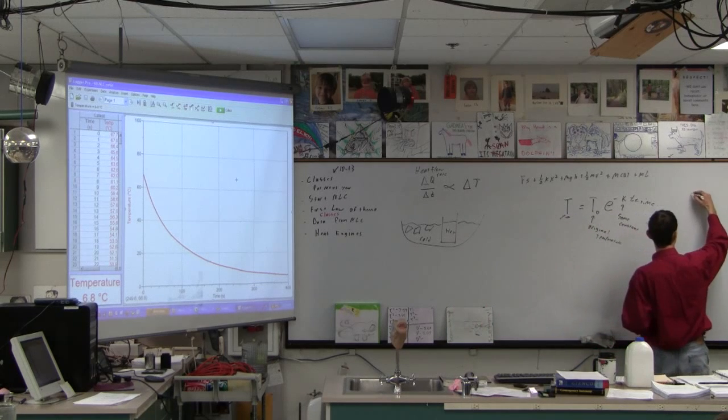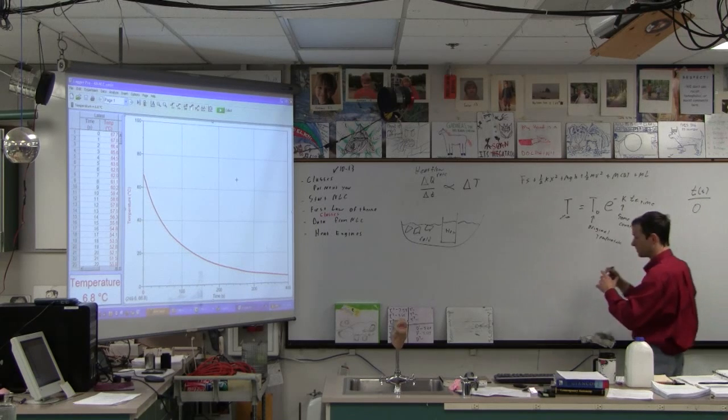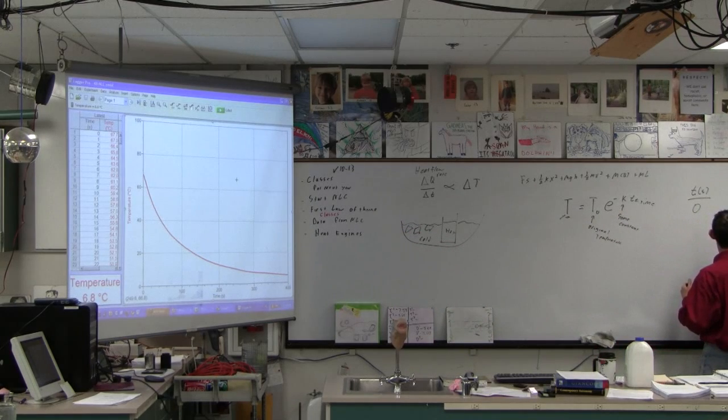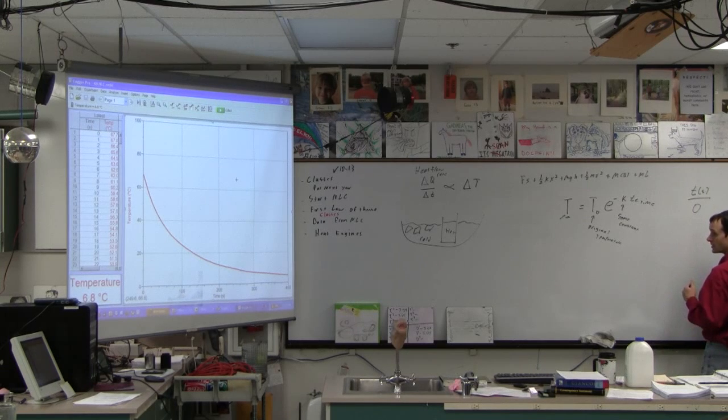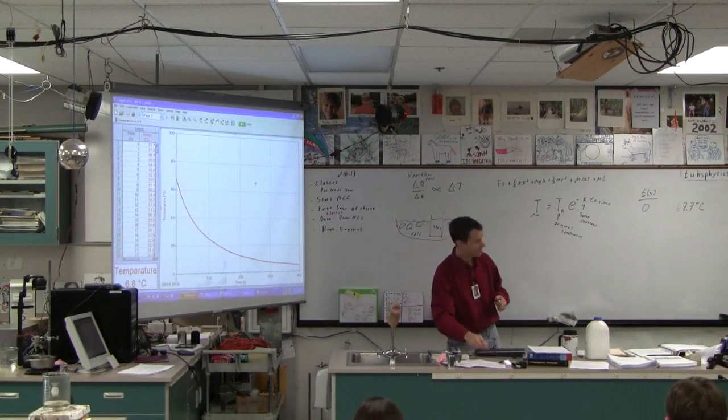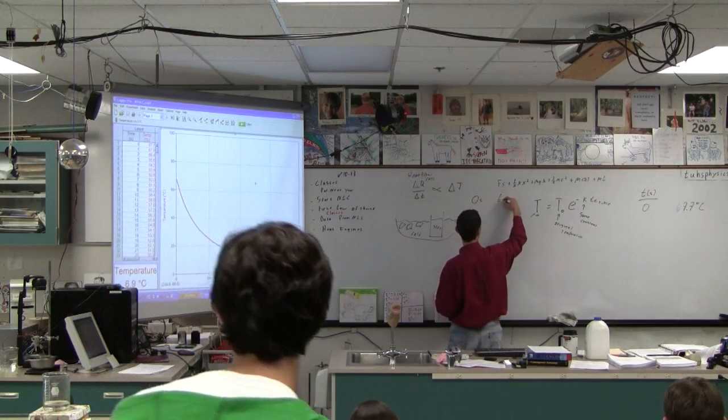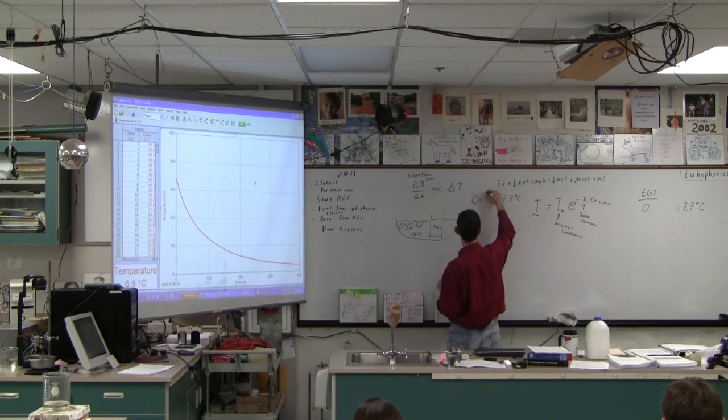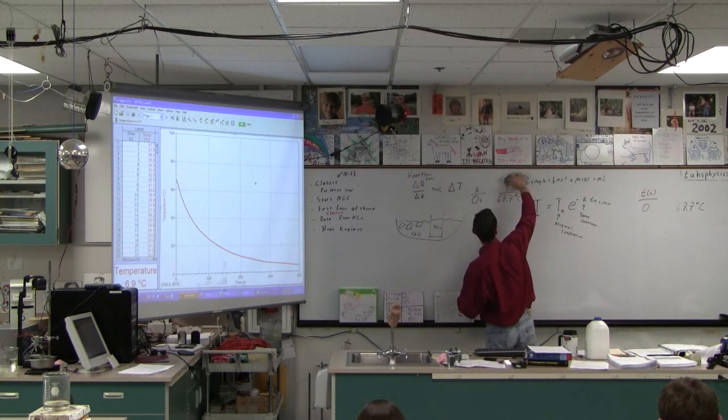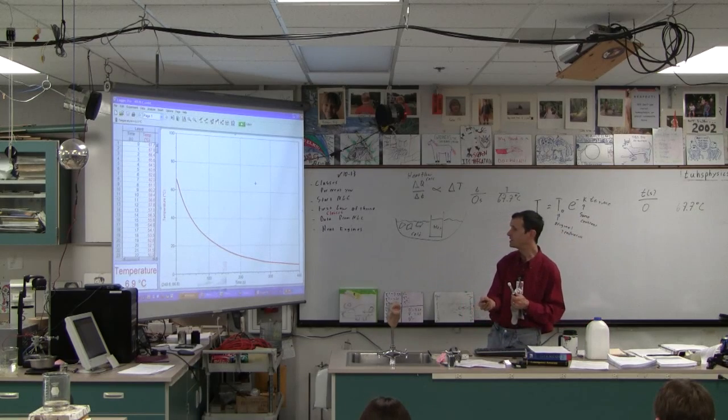Let's make a little data table. At 0 seconds, this is time in seconds, at 0 seconds this will be our original temperature. Let's check it out. What was it? It was 67.7, wasn't it? 67.7 degrees Celsius. I'm going to put the data table over here so I can see it on the camera.